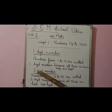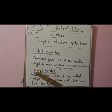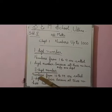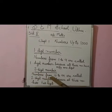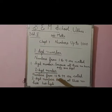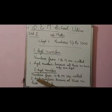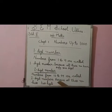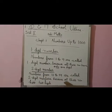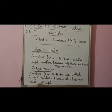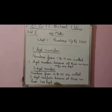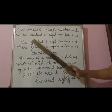Now we move to the second topic, that is two digit number. Numbers from 10 to 99 are called two digit numbers because all these numbers have two digits.